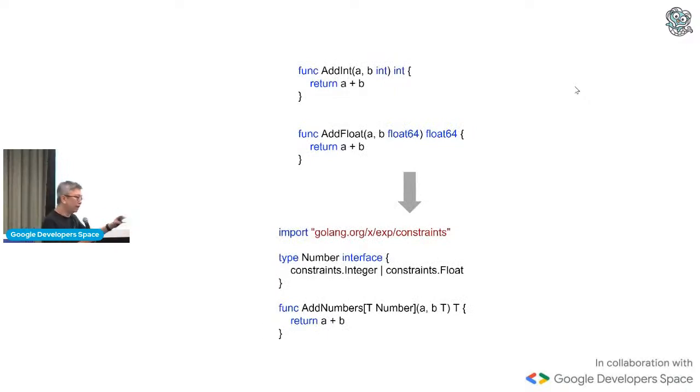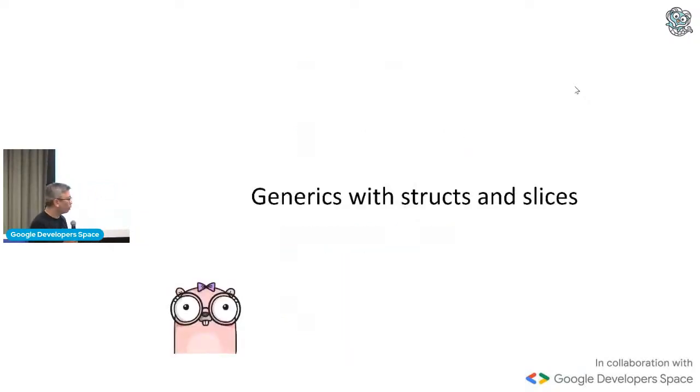Okay? So if I look at the same code again, as I did just now, instead of int and float, what I do is I define one constraint called number. Now T is of... The constraint is number. So the type parameter T is constrained by a number. And then similarly, A and B is of type T. Okay? So this is using the constraints package.